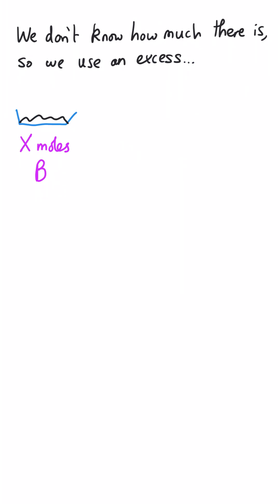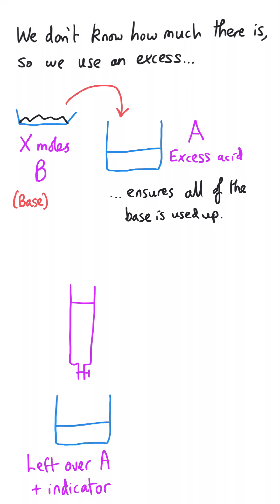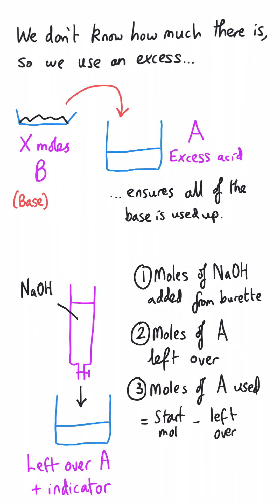For example, if we have a solid we know is a base but don't know precisely how many moles we have, we react that base with an excess of acid to make sure all the base gets used up. We then find out how much acid is left over by titrating it with sodium hydroxide from the burette. From the moles of sodium hydroxide added, we deduce the leftover acid, then subtract to find how much acid was used, and from that work out the original moles of base — working backwards, hence 'back titration'.